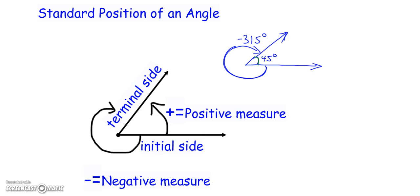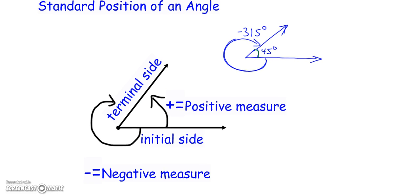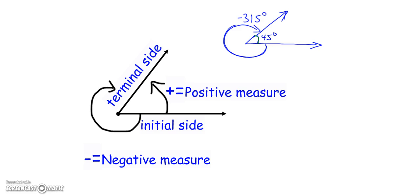It's the direction that you're traveling. If you're traveling counterclockwise, it's going to be positive. And if you're traveling clockwise, that's actually a negative measure. So just make sure that you know, if you measure in a clockwise fashion, it's a negative angle measure. If you measure counterclockwise, it's always going to be a positive measure.